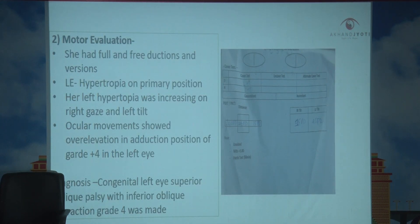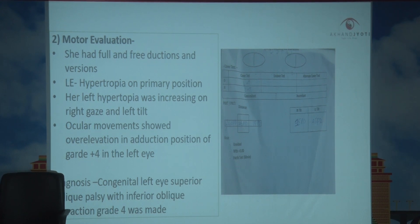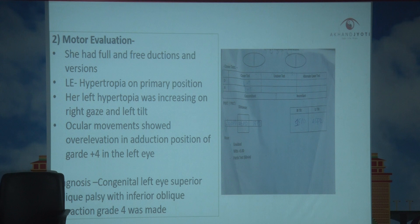Left eye hypertropia was present in primary position. The left hypertropia was increased to 45 prism diopters on right gaze and decreased to 15 prism diopters on left gaze. This left hypertropia decreased to 15 prism diopters on right head tilt and increased to 45 prism diopters on left head tilt. Ocular movement showed over-elevation in adduction of grade four in the left eye. A diagnosis of congenital left eye superior oblique palsy with inferior oblique overaction grade four was made.